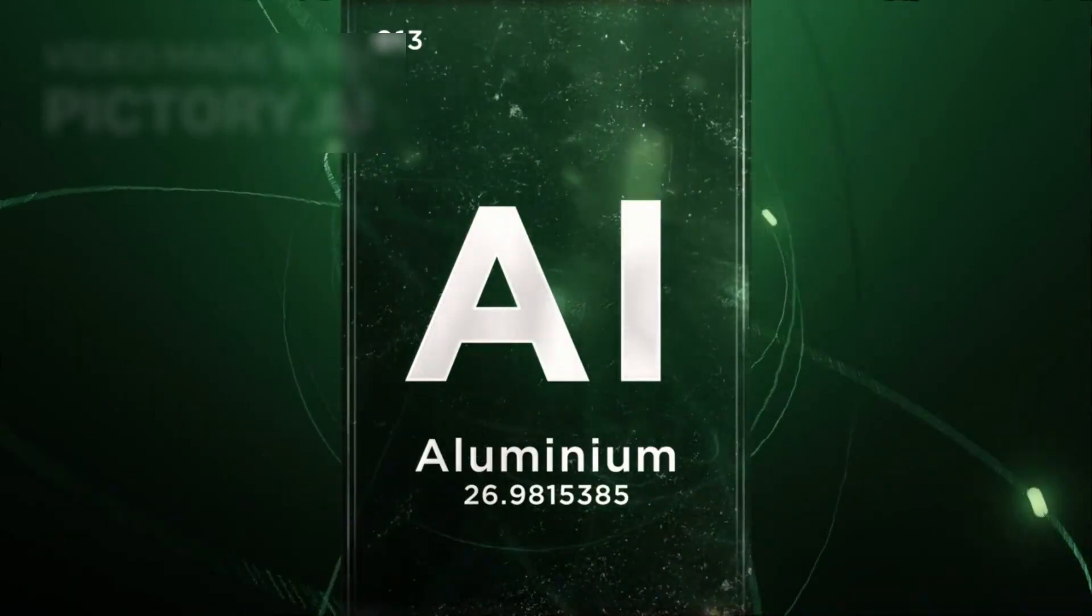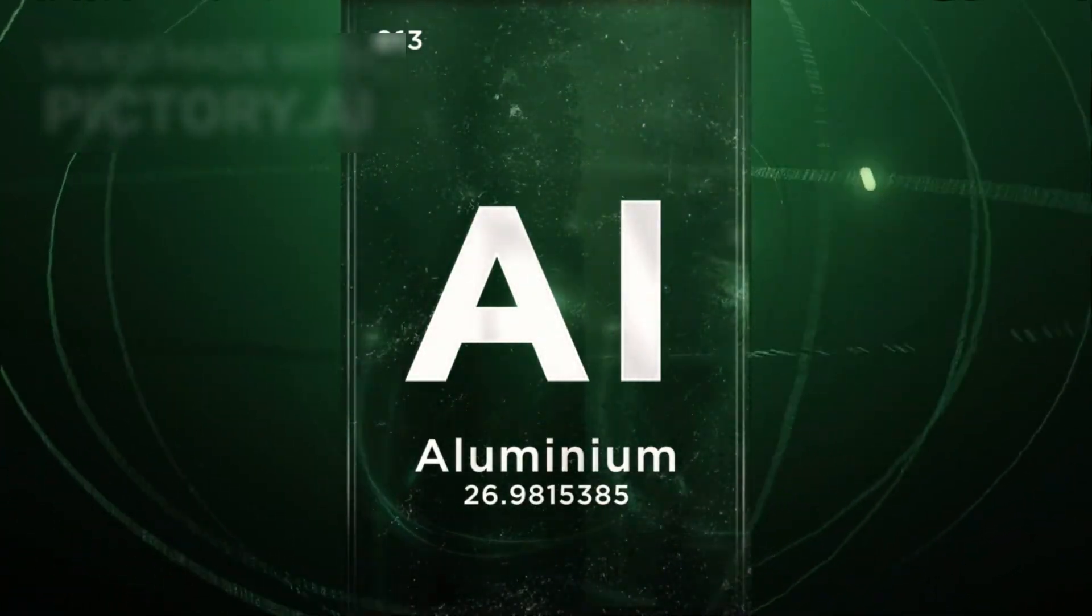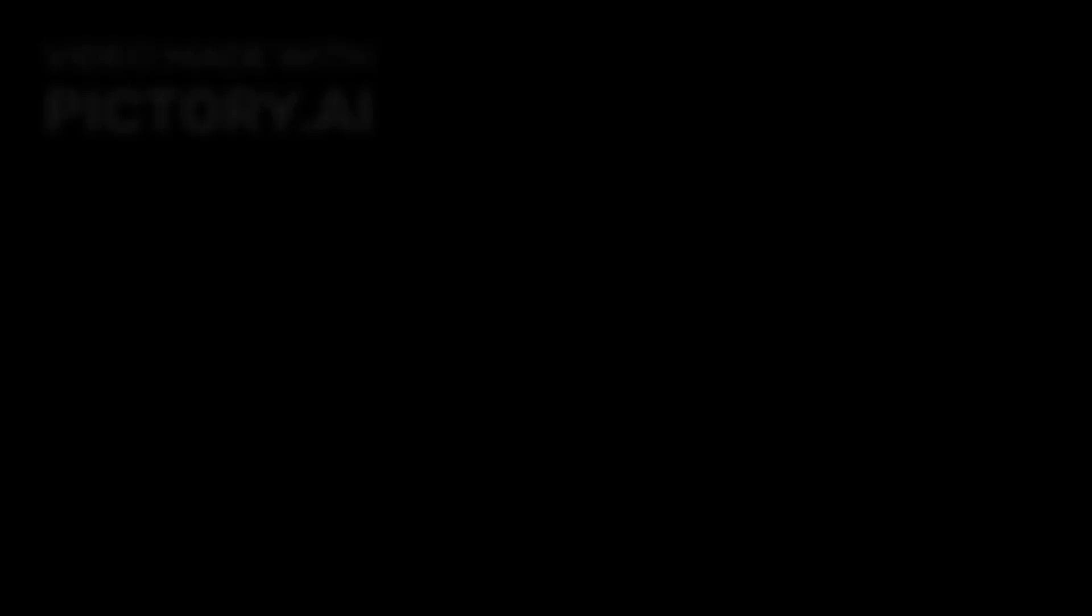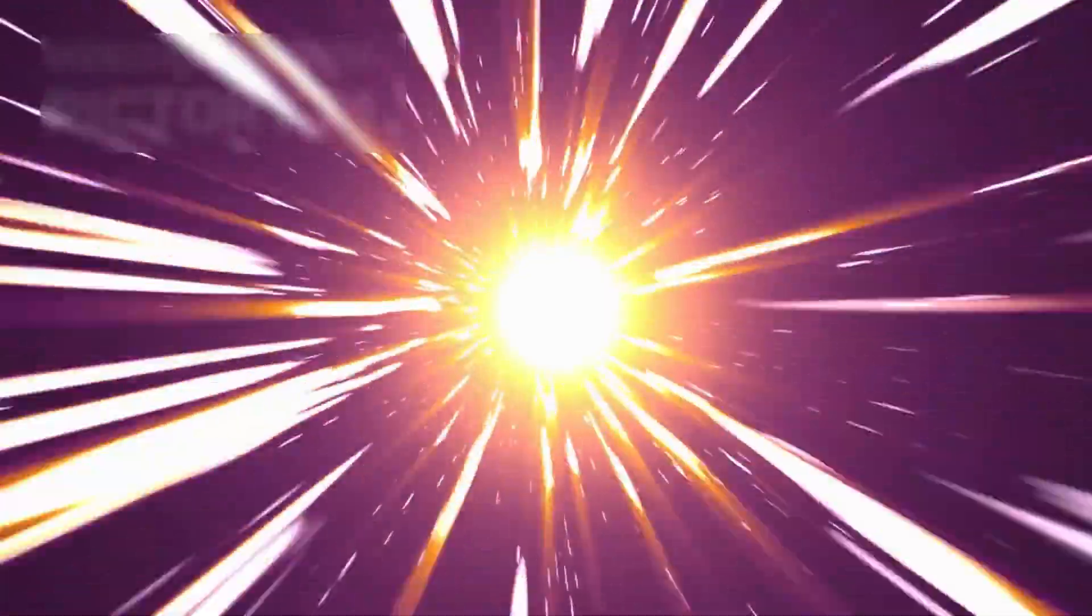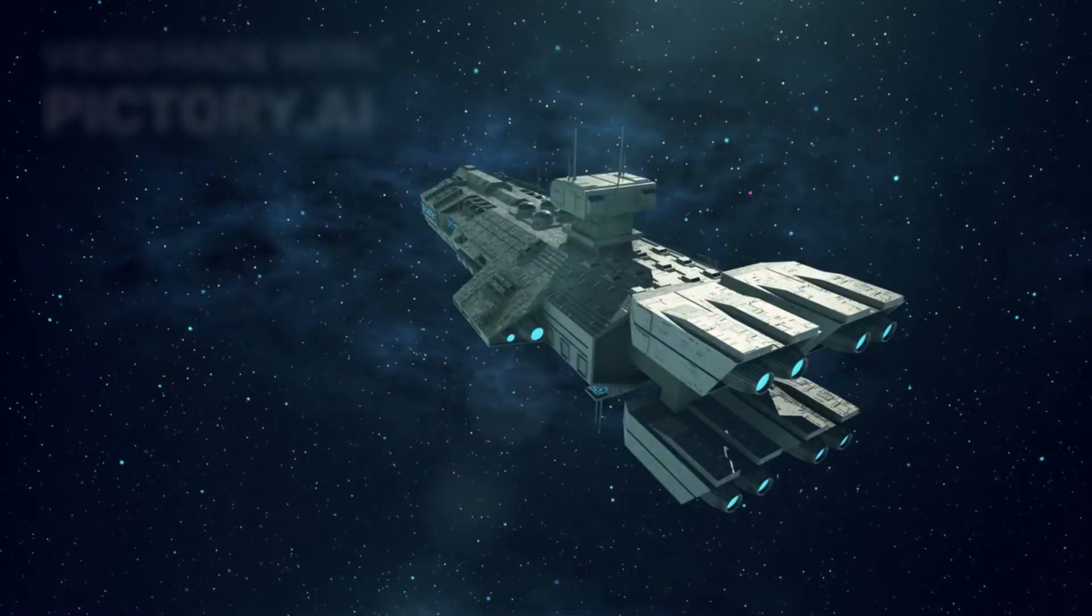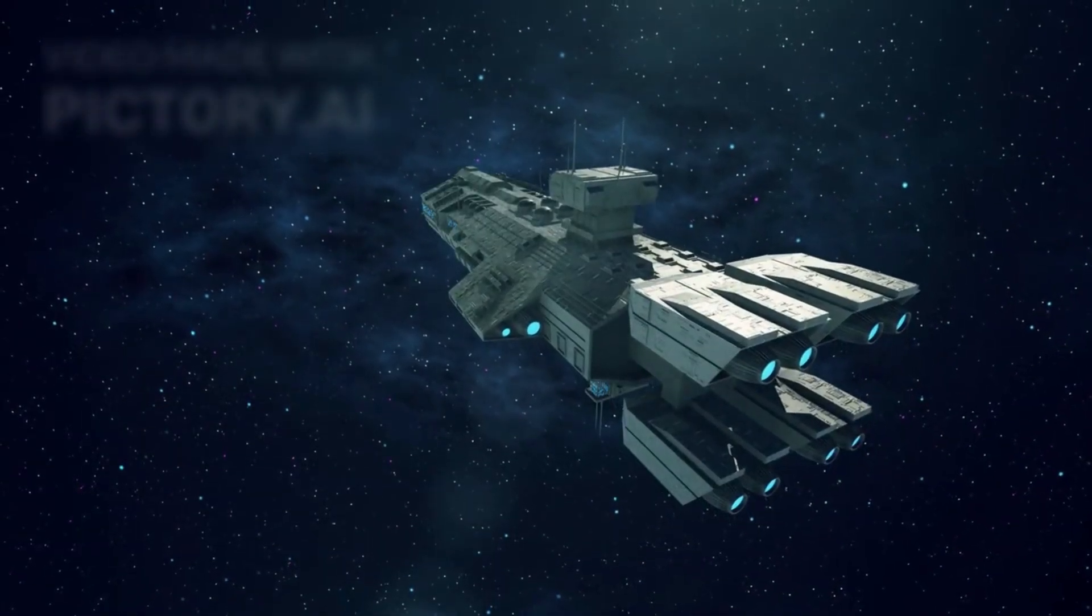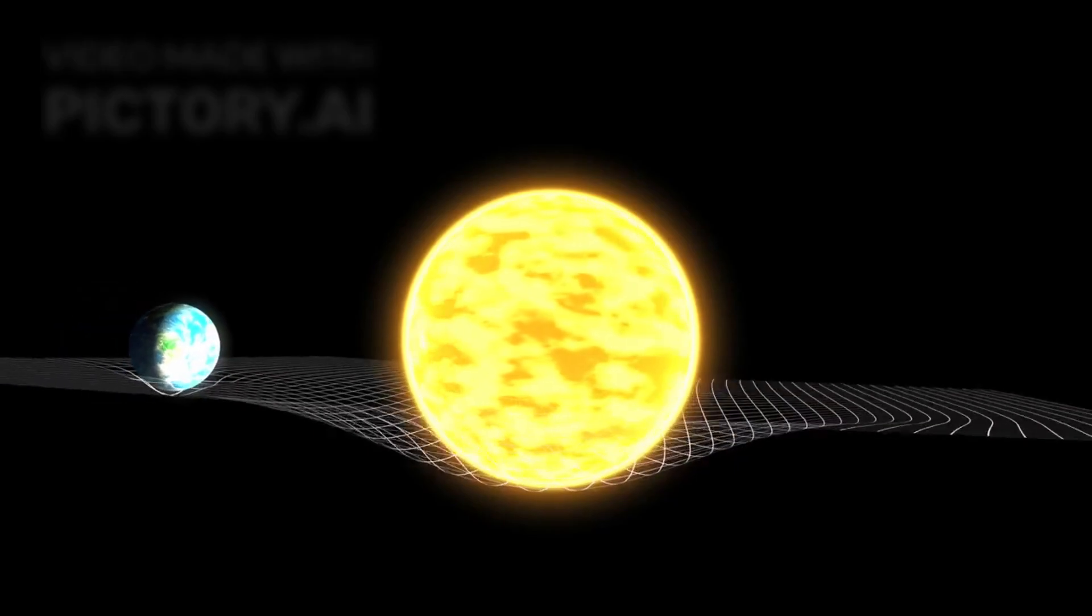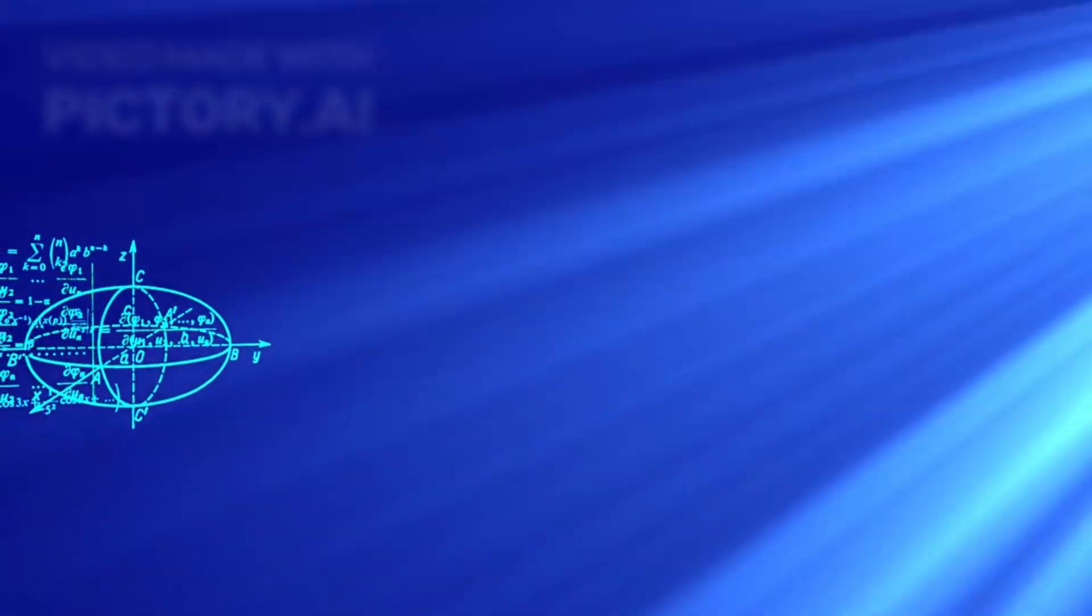In 1994, physicist Miguel Alcubierre proposed a concept that sent ripples through the scientific world. A warp bubble that contracts space in front of a spacecraft and expands it behind. The ship itself never moves. It sits at the center of a moving distortion. From the outside, it appears to be traveling faster than light. But technically, it's not violating relativity. The loophole had a name. And that name was Alcubierre.